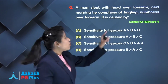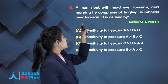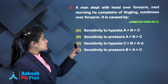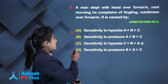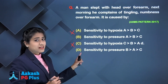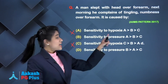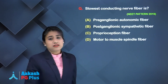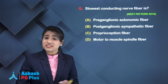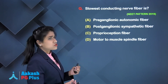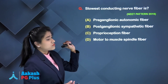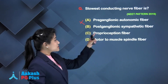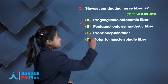Next question: a man slept with his head over his forearm and next morning complains of tingling and numbness. This is caused by pressure. Eliminating hypoxia options, and applying the mnemonic 'under pressure kids in nursery say A, B, C,' the answer is B. For the slowest conducting nerve fiber question — C fibers are slowest — C fibers are found in postganglionic sympathetic fibers, so the answer is B.